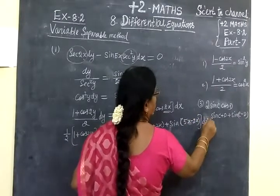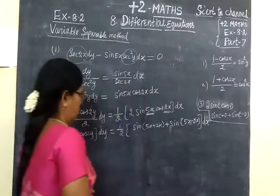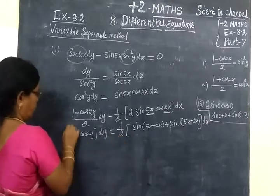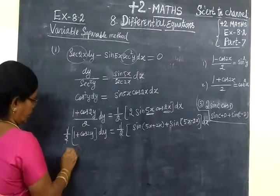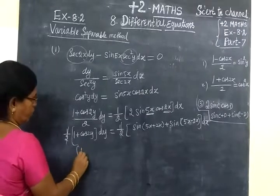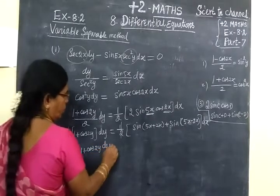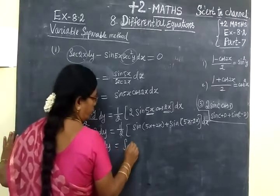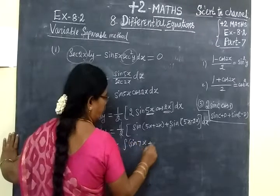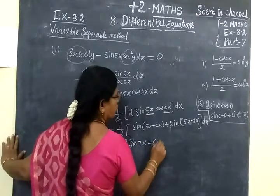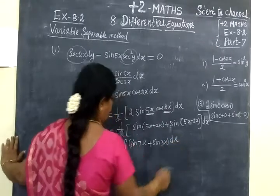Then, in the class D plus. So this is equal to half of and I will cancel I know. So integrating on both sides. Taking integration on both sides, integral of 1 plus cos 2y dy equal to integral of sin 7x plus sin 3x then dx.